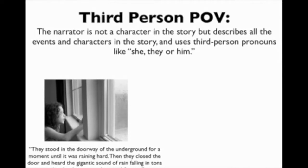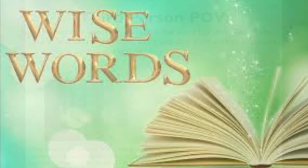For example, this is a quote from the story: "They stood in the doorway of the underground for a moment until it was raining hard. Then, they closed the door and heard the gigantic sound of rain falling in tons and avalanches everywhere and forever." In this statement, Ray Bradbury, who is the author and narrator, is telling us what he sees as the narrator. He is showing us what is going on by referring to the characters as they.